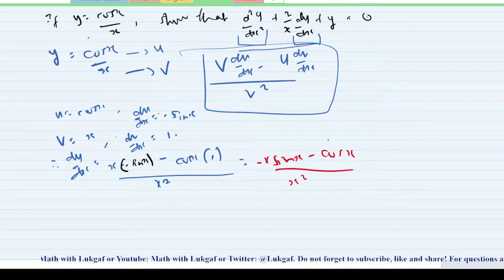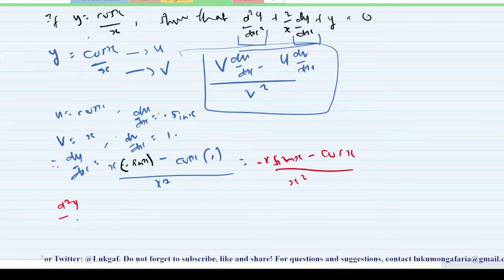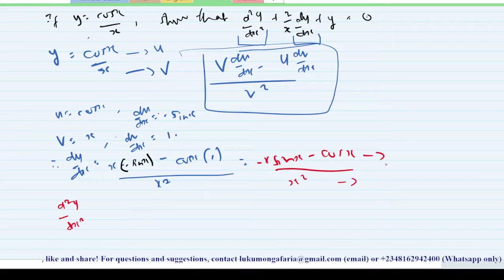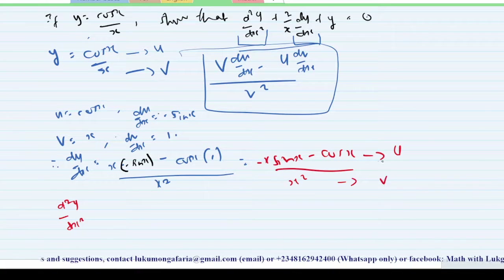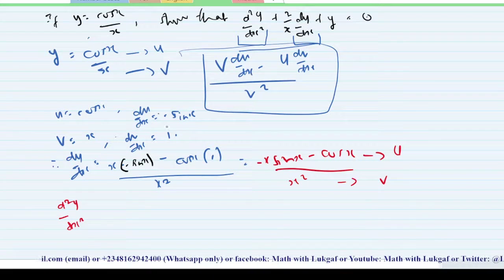Now if you understand this, you notice that to find d²y/dx², it means you are going to re-differentiate dy/dx. And since you still have it in terms of a fraction, you are going to apply the quotient rule again.